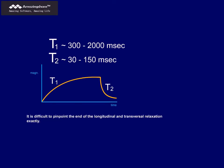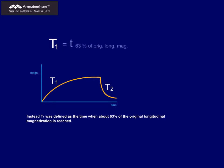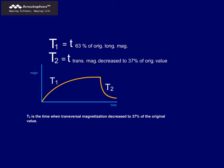It is difficult to pinpoint the end of the longitudinal and transversal relaxation exactly. Thus, T1 and T2 were not defined as the time when relaxation is complete. Instead, T1 was defined as the time when about 63% of the original longitudinal magnetization is reached. T2 is the time when transversal magnetization decreased to 37% of the original value. These percentages are derived from mathematical equations, but we do not want to go into more detail here.